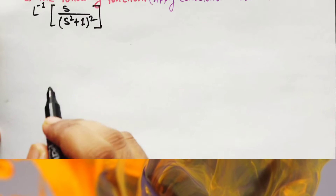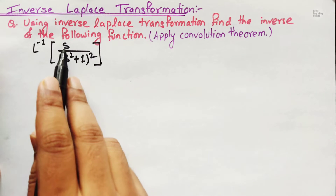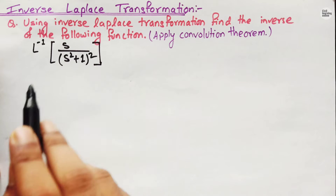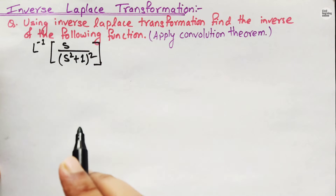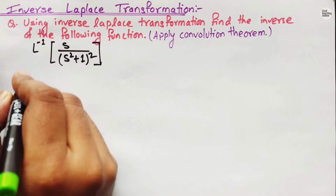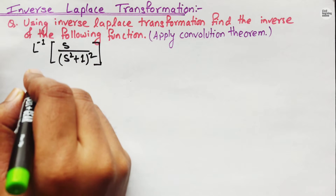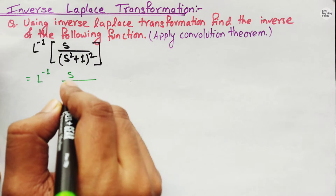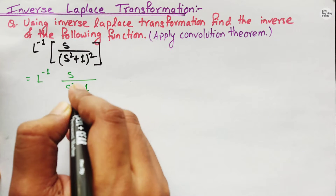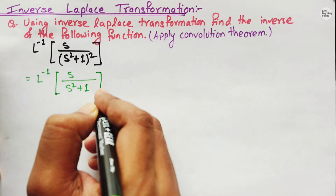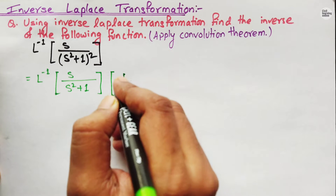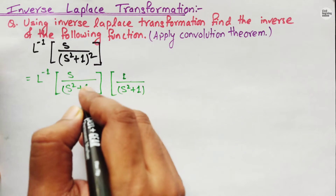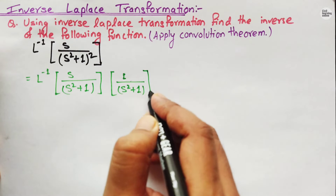When we have a close look at this function, we can see that it is the inverse Laplace transformation of s upon (s² + 1)². So let us split the denominator into two different terms. We will split it as s/(s² + 1) and another term 1/(s² + 1). We can write it in this form.